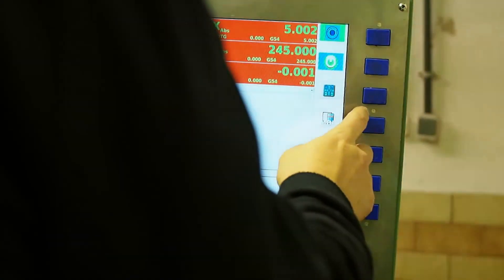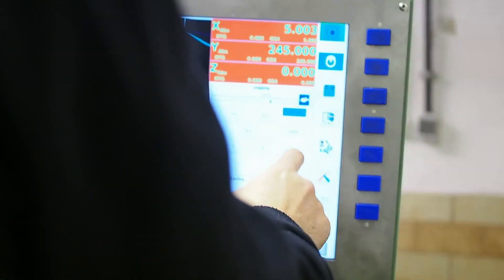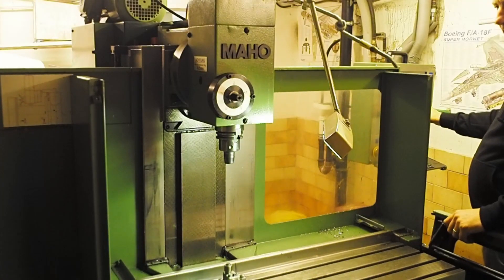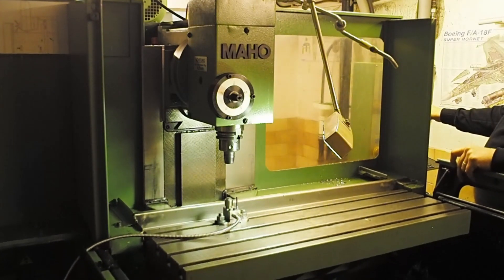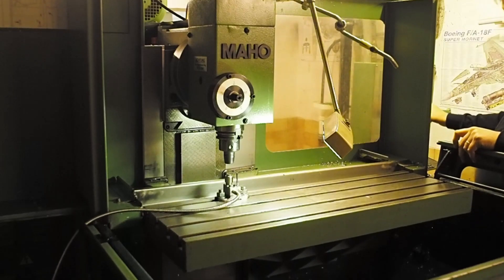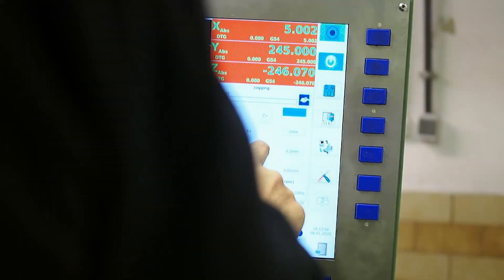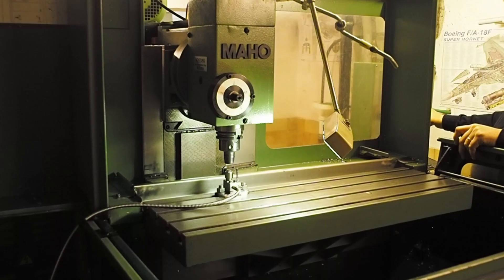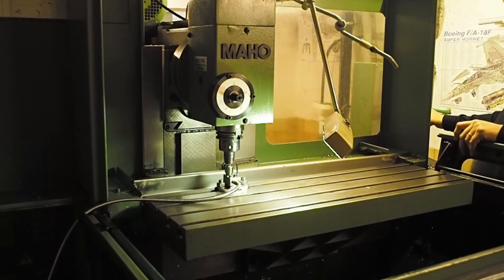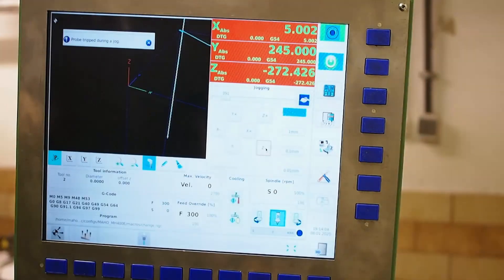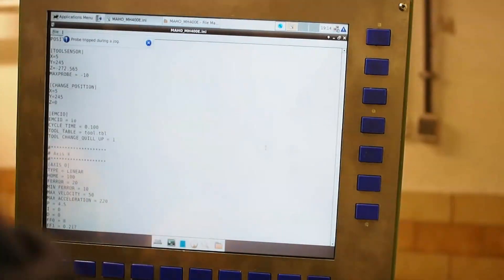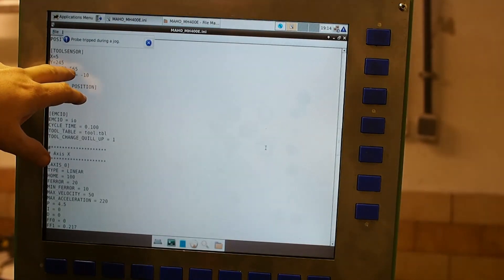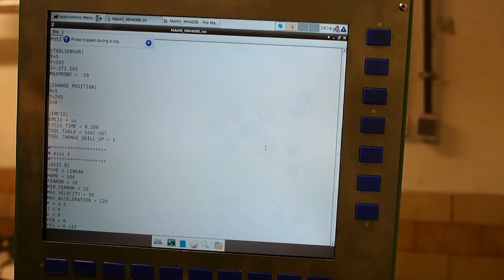And then if we drop down... I'll just slow that down a bit. When it trips, we're at negative 272.425. The last time I did it, it was 272.565. We still need to do this with a more pointed tool.